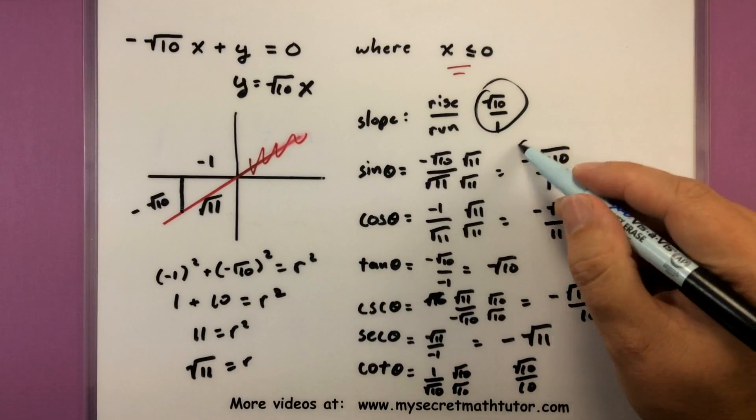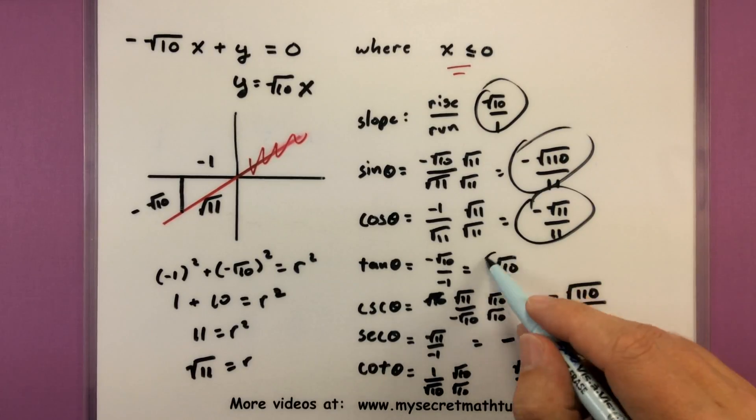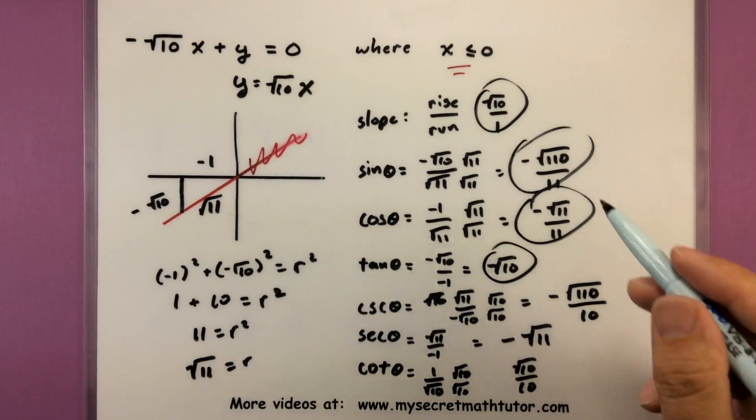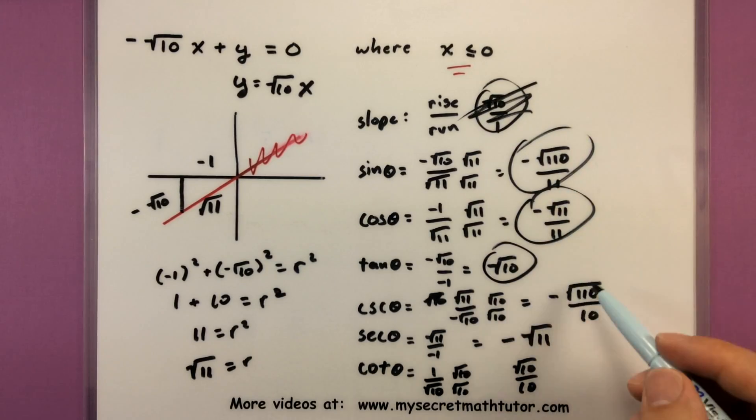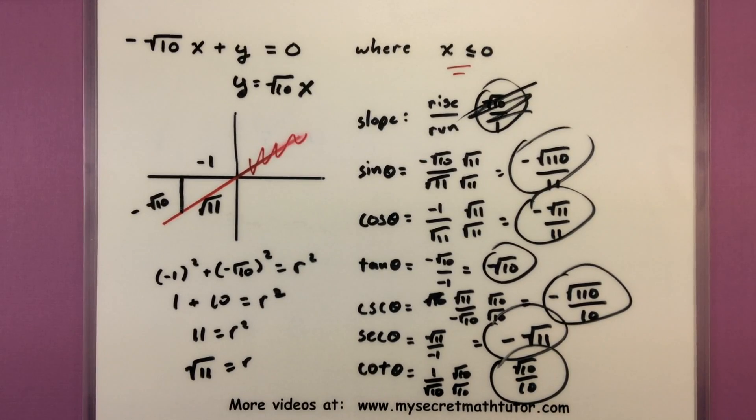So counting them up: 1, 2, 3, 4, 5, 6. Nice. If you'd like to see some more videos, please visit MySecretMathTutor.com.